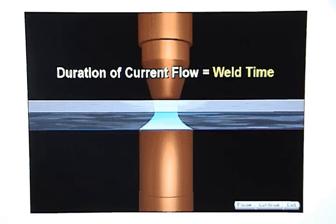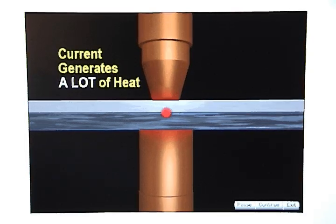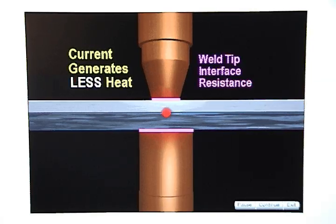The duration of the current flow is referred to as weld time. The current generates a lot of heat when it encounters the resistance at the part interface and a lesser amount of heat at the weld tip interface.